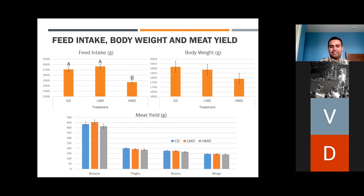With HMD, however, we did see a reduction in feed intake and this may be indicative of a presence of a masked form of the mycotoxin DON. Current methods of detecting DON can measure about four to five different variations of the molecule, but there are about 20 known variations of DON. However, the reduction in feed intake did not translate across into body weight or into meat yield. We also did not see a reduction in overall organ weights and organ sizes.